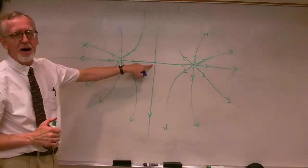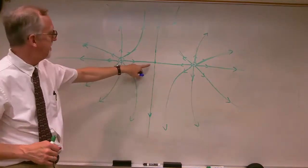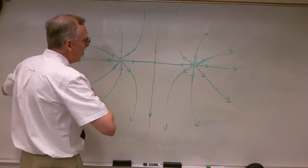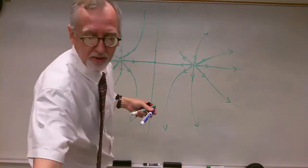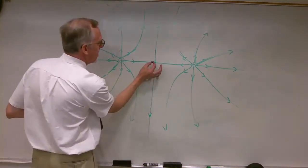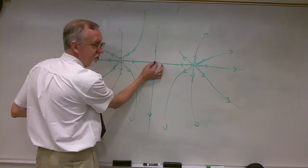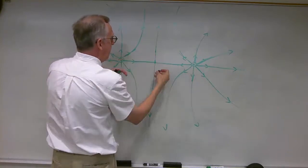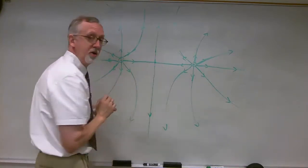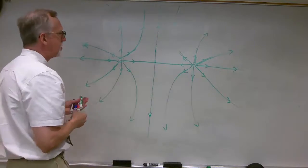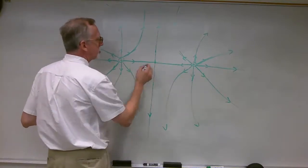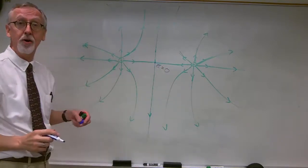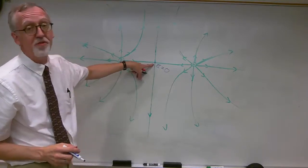What's going on here? I said that electric field lines cannot cross, but it certainly looks like they're crossing here. But if I were to take a test charge and put it right in the center, what would the force be? This charge would push it one way and the other charge would push it the other way. If it were right in the center, the net force would be zero.